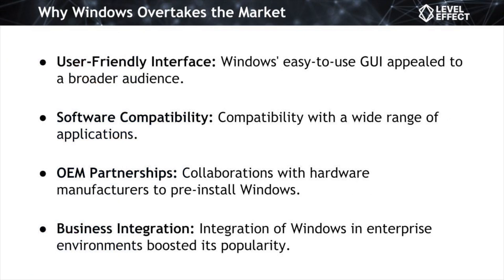So why did Windows really overtake the market? A huge reason initially was the GUI itself — it offered an intuitive and visually appealing way for users to interact with their computers, contributing to widespread adoption and productivity. Software compatibility was another driving force. The extensive compatibility Windows offered through earlier iterations with a diverse array of software applications ensured users could access a wide range of programs without compatibility issues.